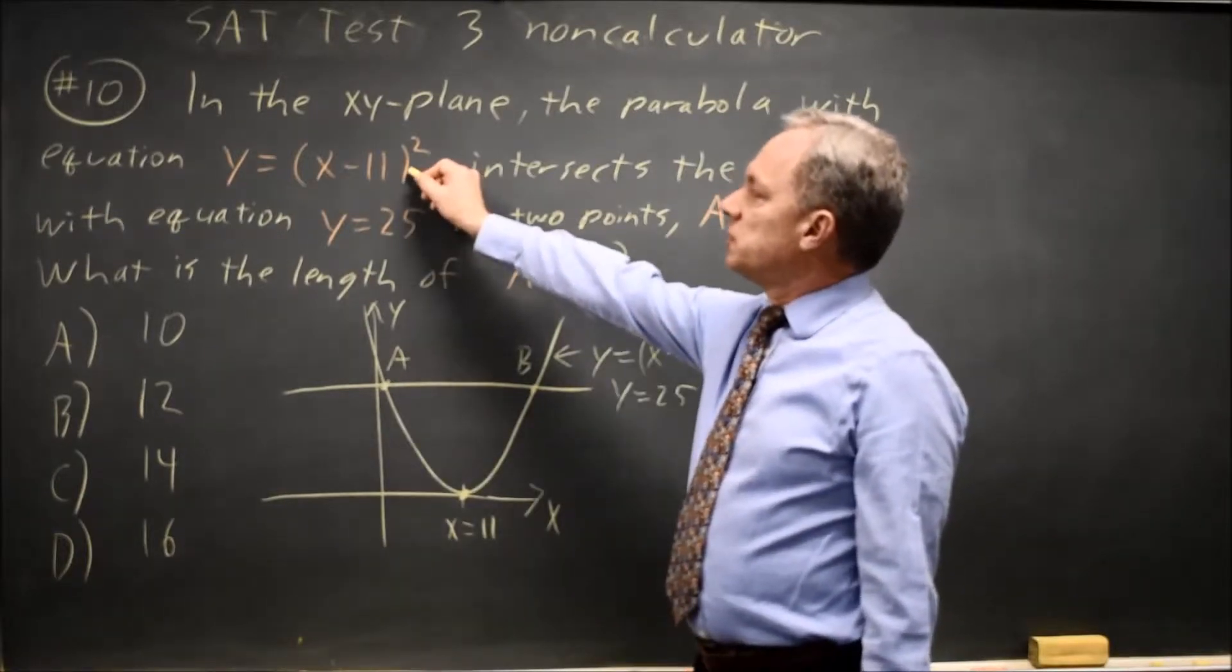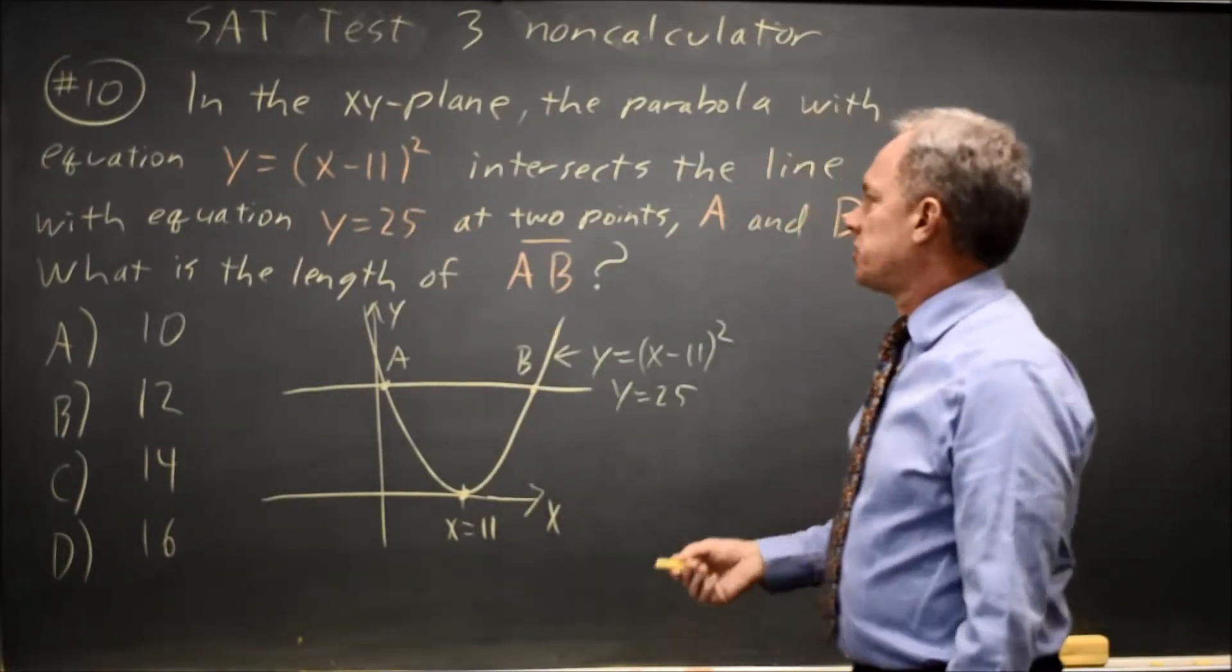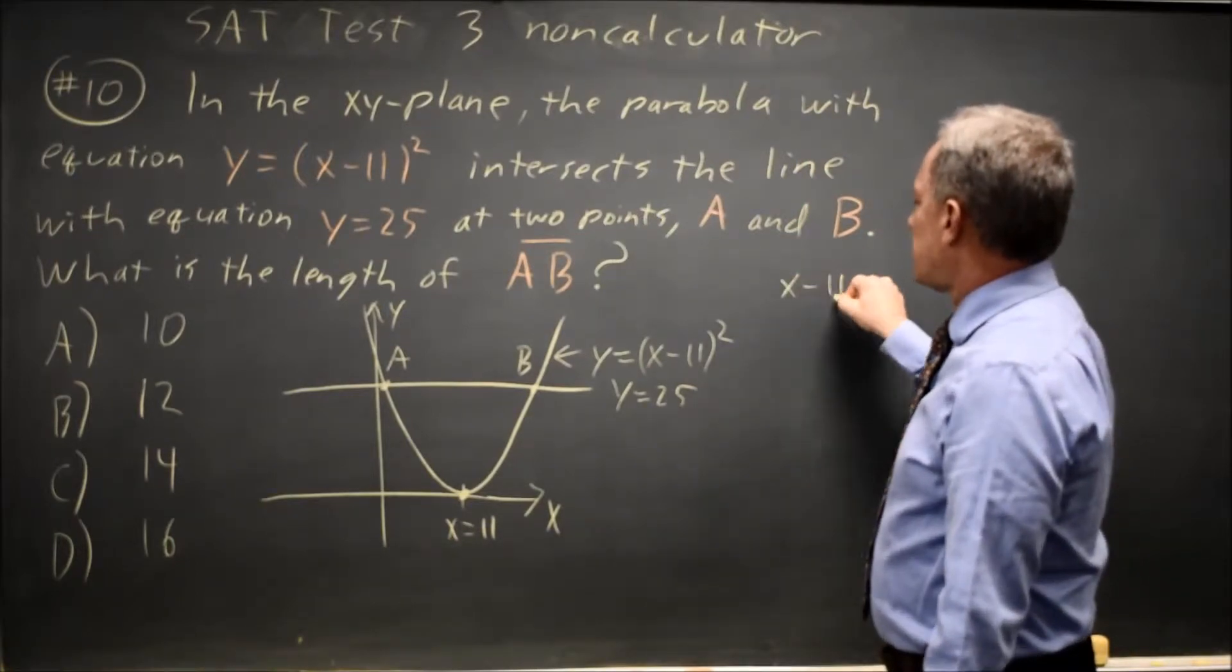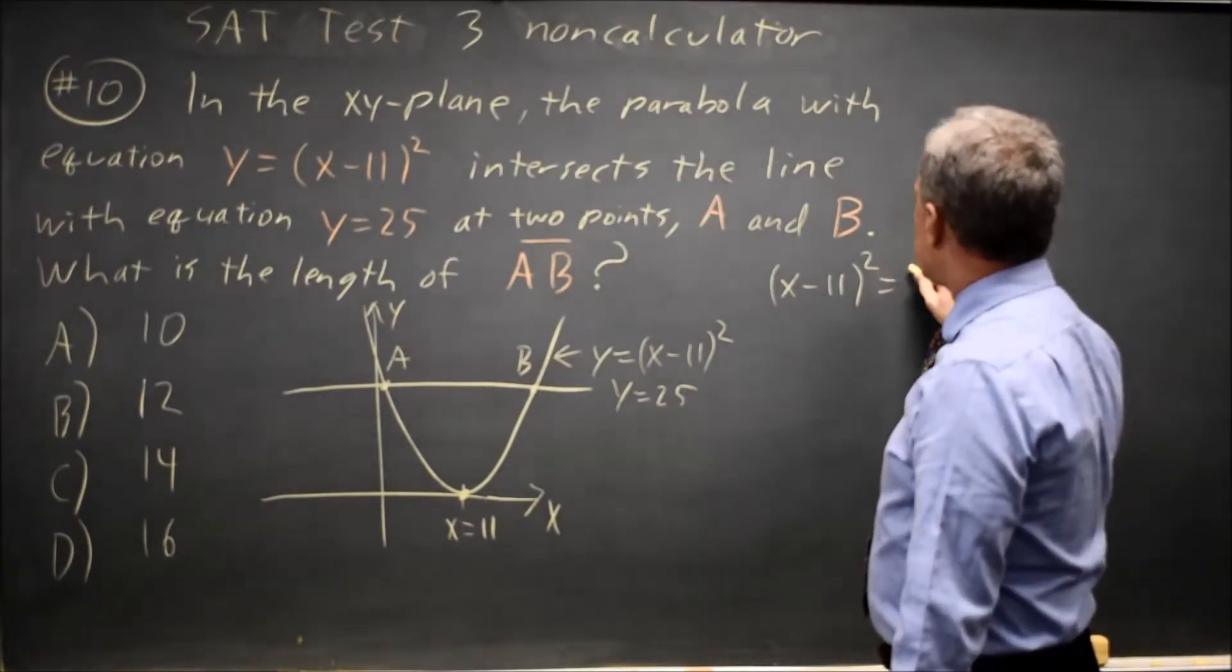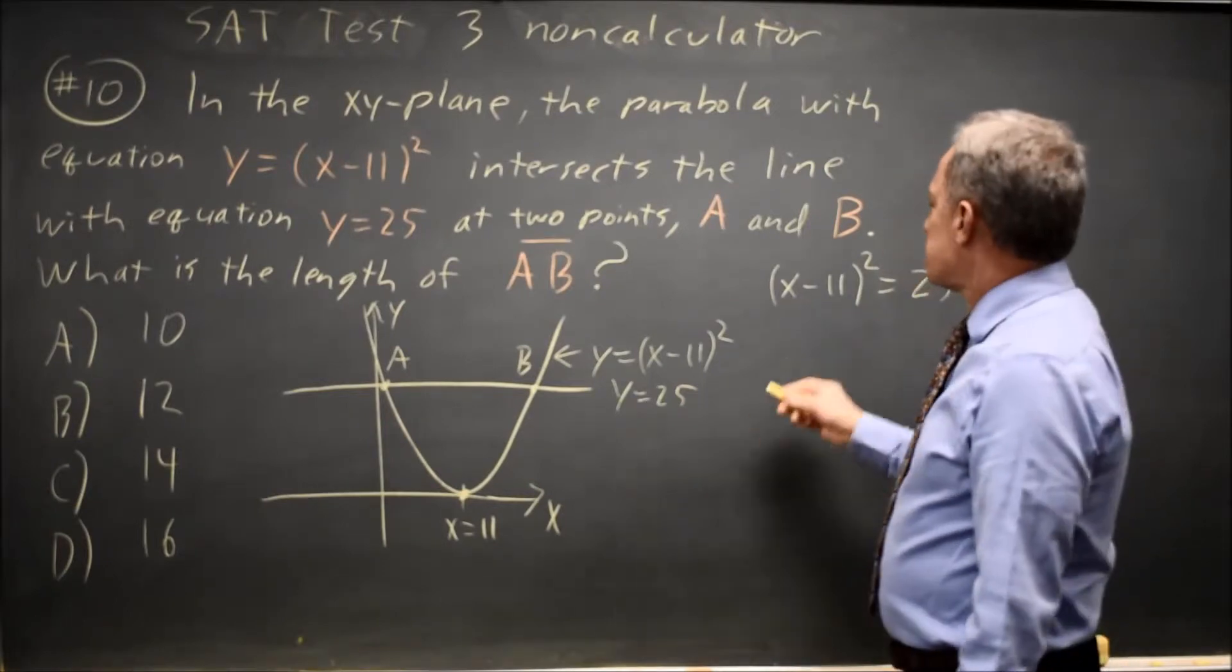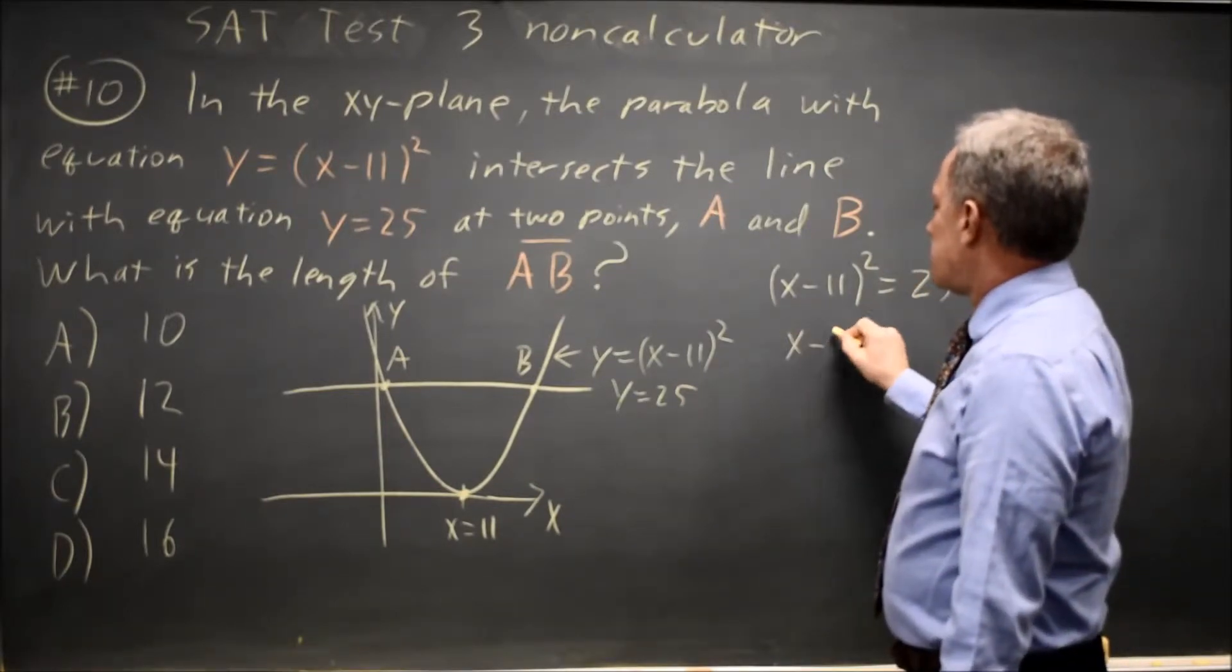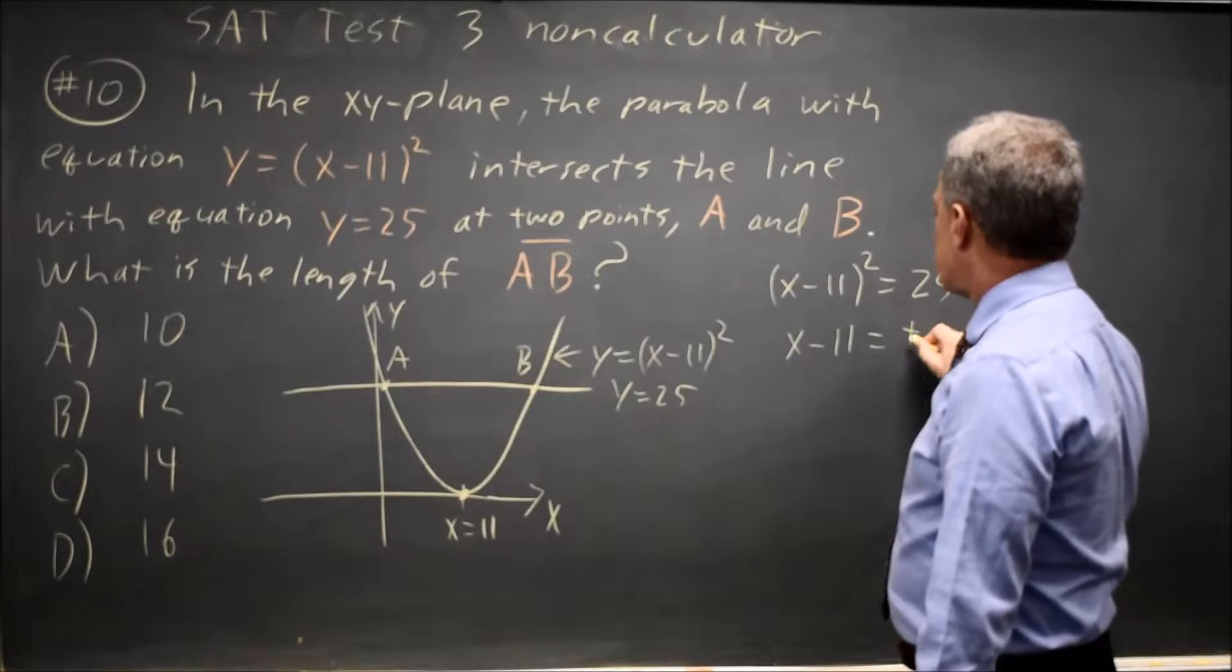So let's solve this equation equals this equation. That gives me x minus 11 squared equals 25. Square rooting both sides, I get x minus 11 equals positive or negative.